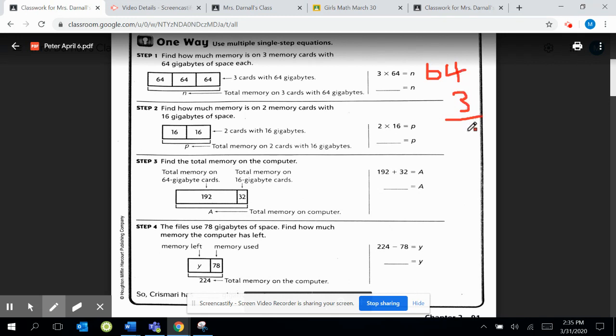But, 3 times 4 is 12, right? And we carry the 1. And 3 times 6 is 18, and one more is 19. So, 3 times 64 equals 192. That's one thing that we found.